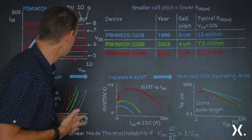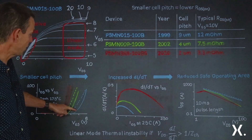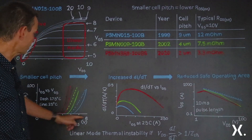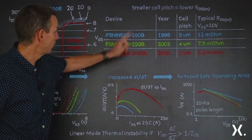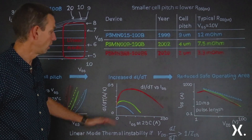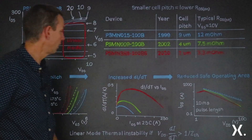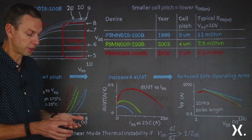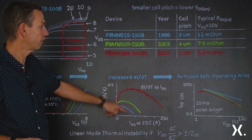Let's now consider the middle graph, which is derived from the first graph, but now we're plotting the change in current with temperature — dI/dT — plotted against the source-drain current. We've got the blue characteristic for the PSMN015-100B, the green for the second device, and red for the PSMN3R8-100BS. As we go through the generations with increasingly smaller cell pitch, the dI/dT has increased. So when you get a hot spot and one location gets hotter, as the temperature rises, this tendency for the current to increase has become more and more severe with the newer generations.